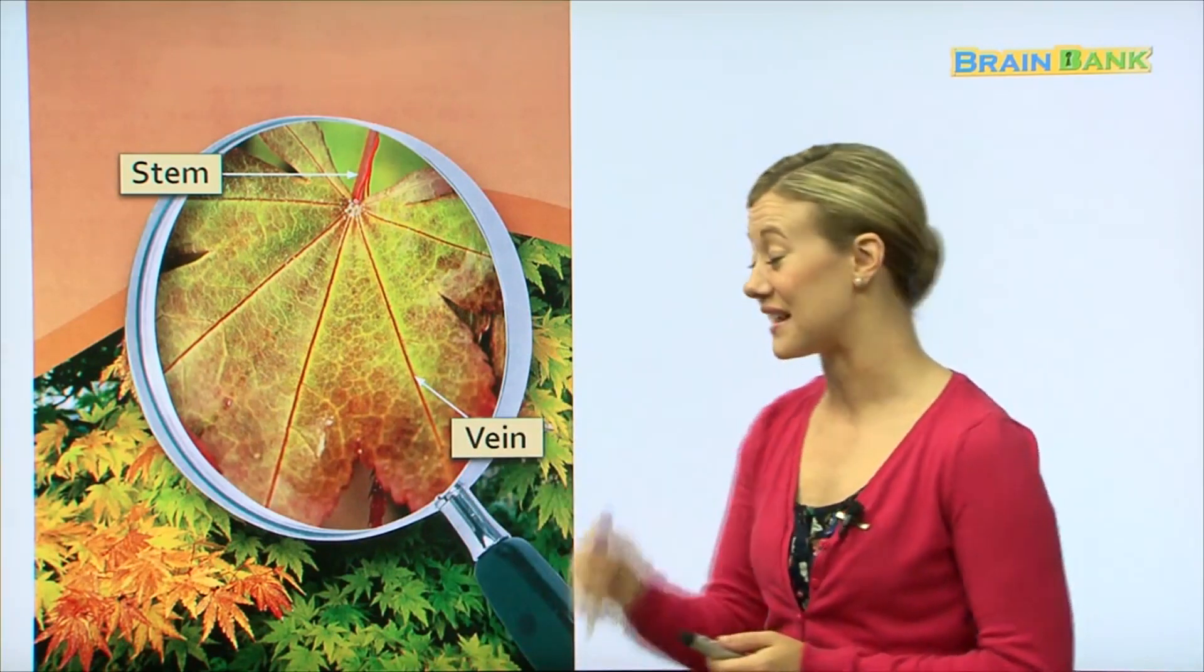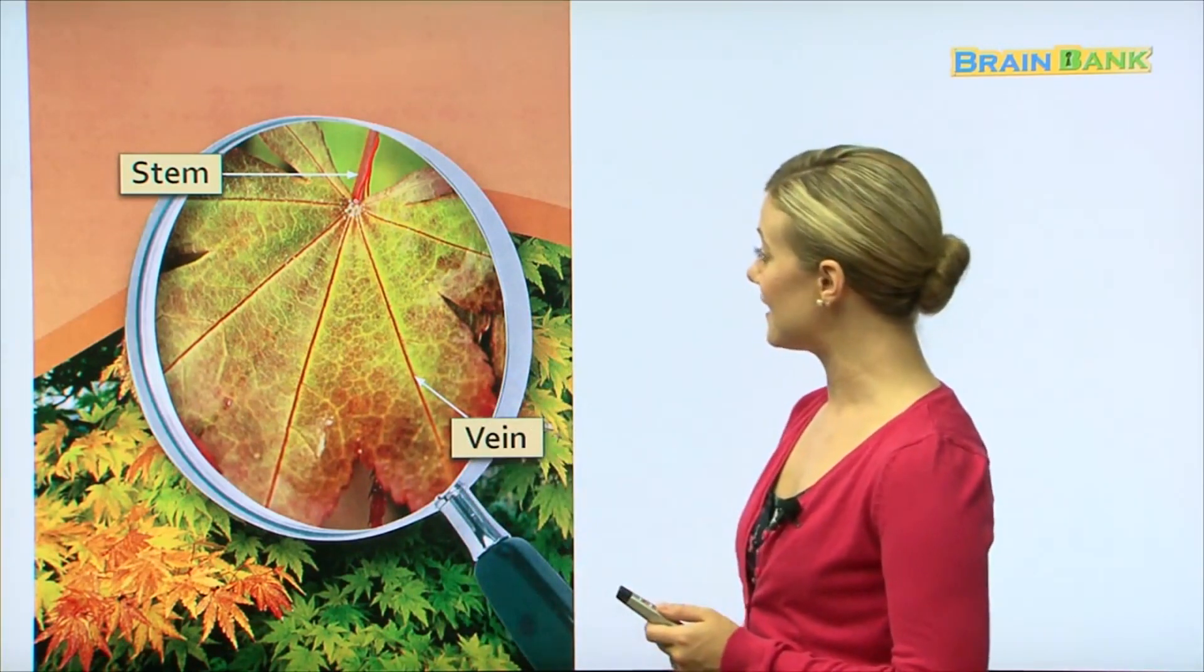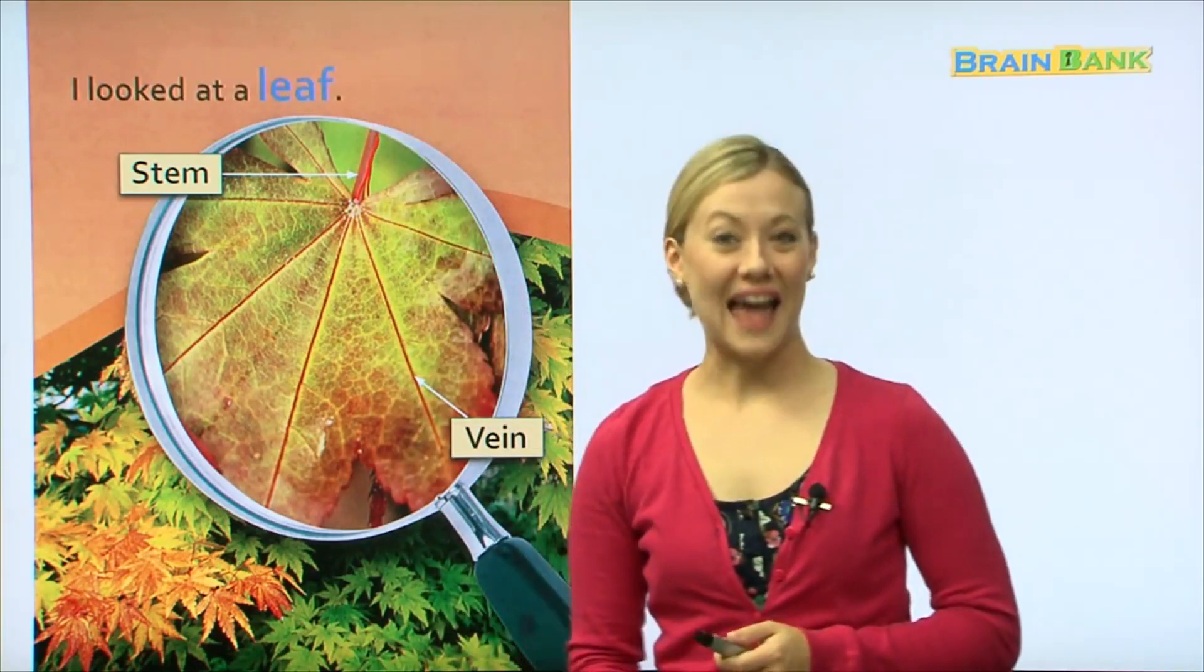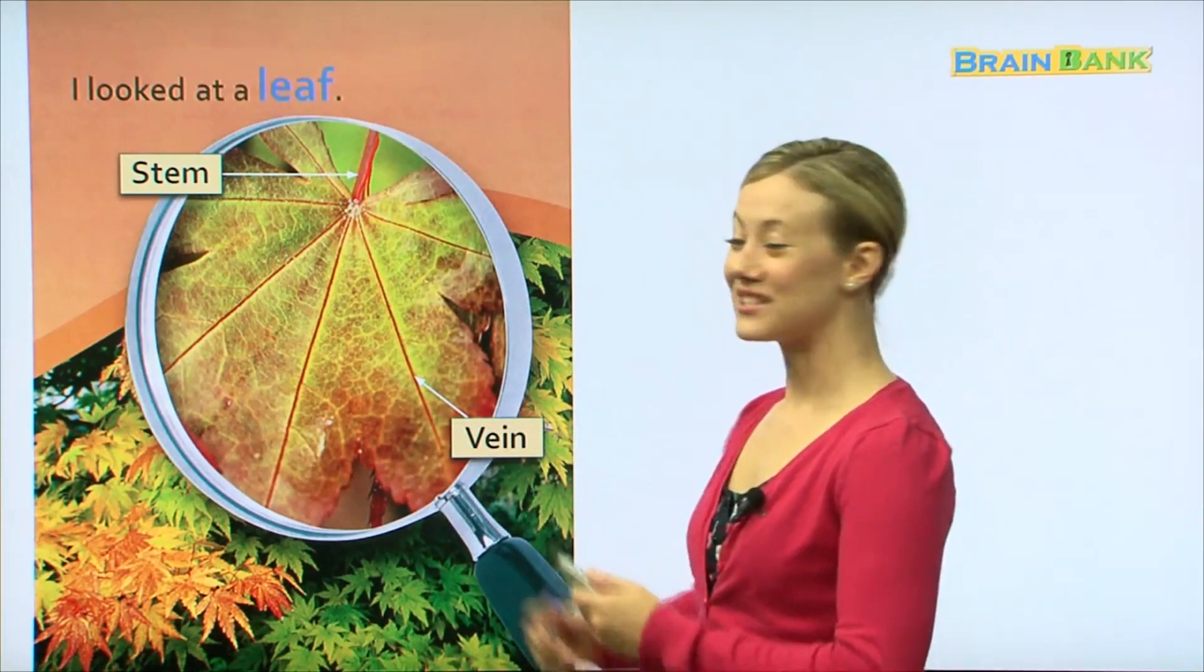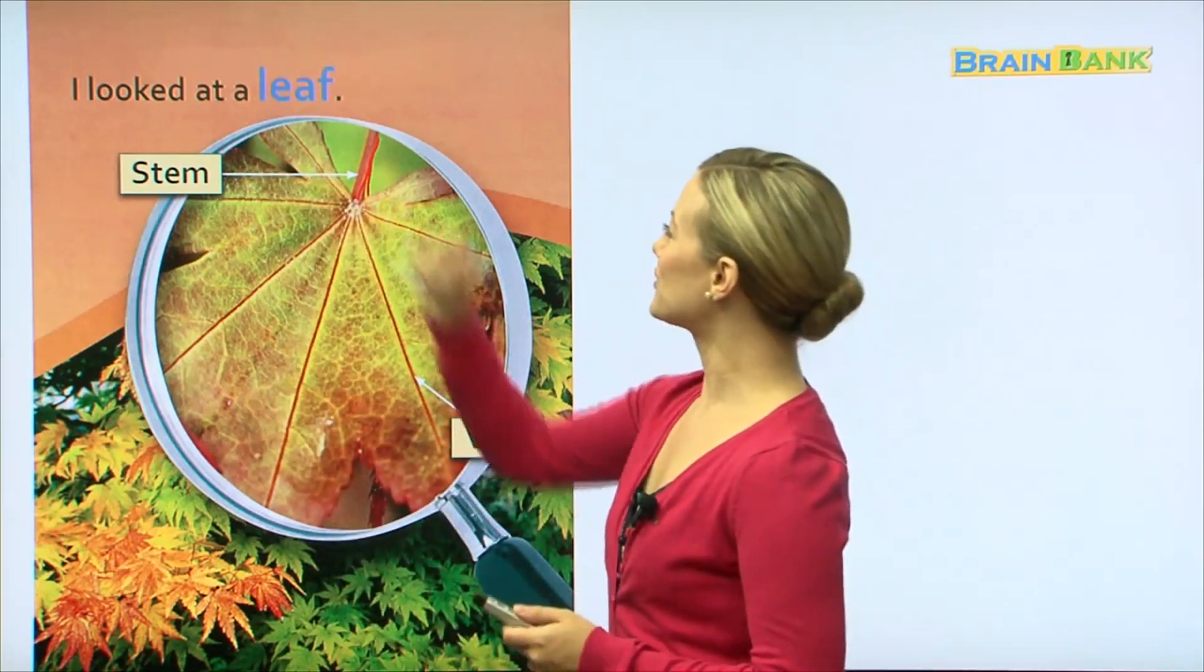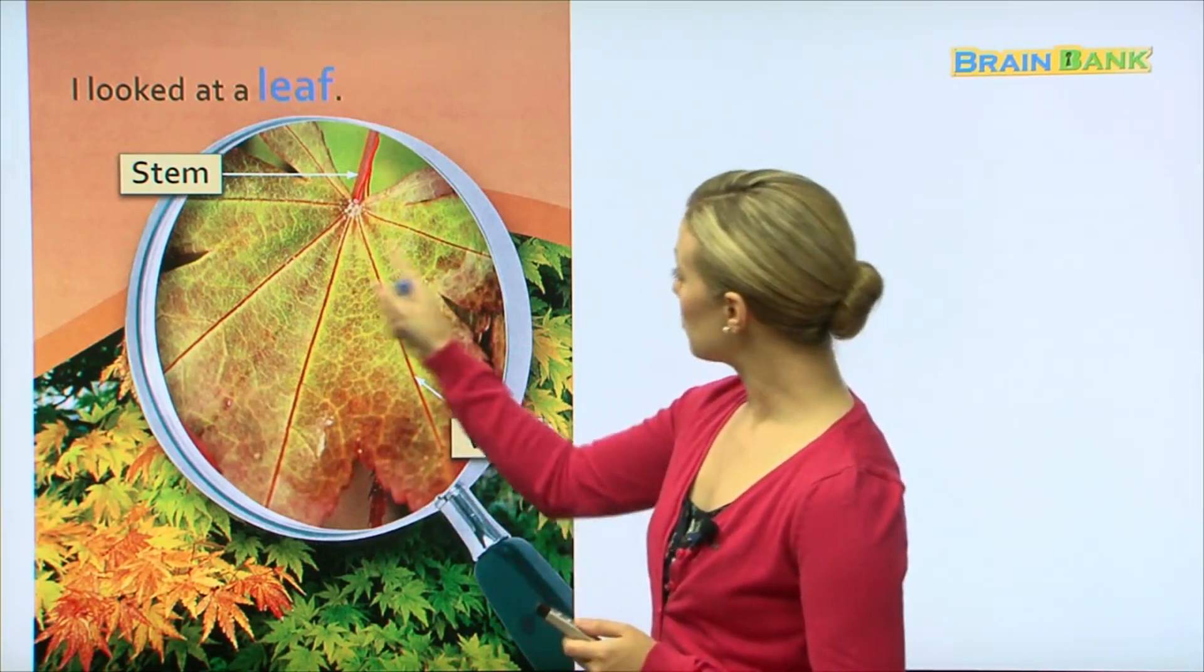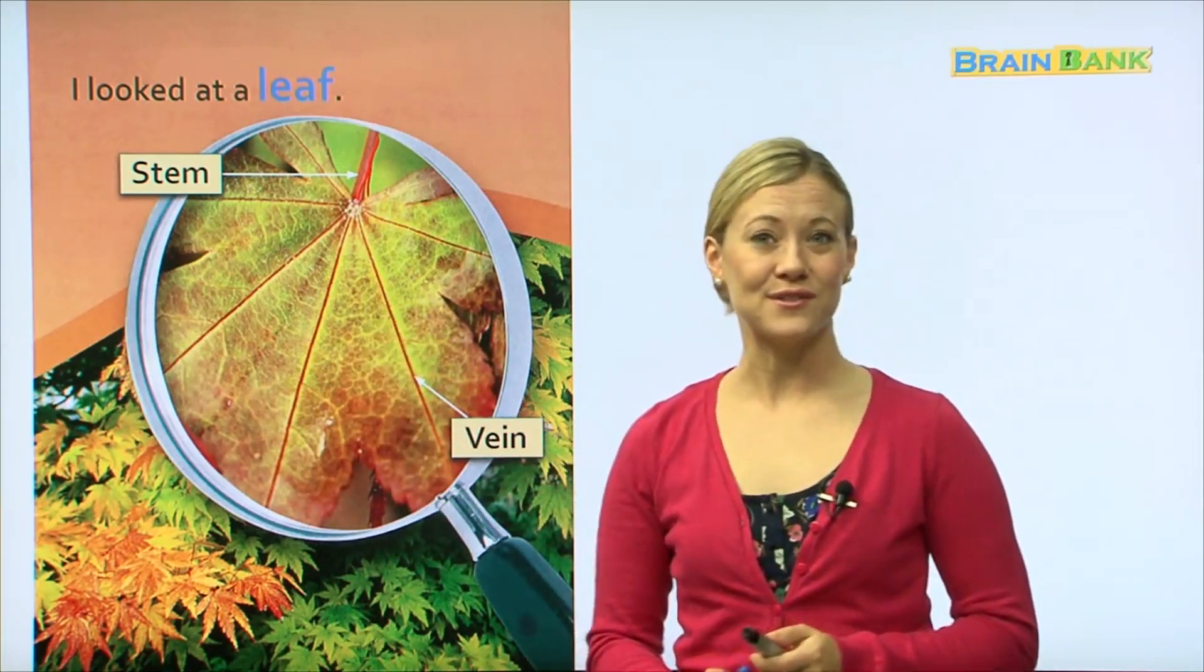You have to look very closely, possibly even with a magnifying glass, to see them. So let's see. I looked at a leaf. All together - I looked at a leaf. Yes, and this leaf is very pretty. It's many different colors, so I am guessing that this season is probably fall or autumn.